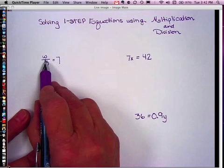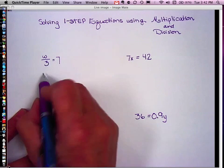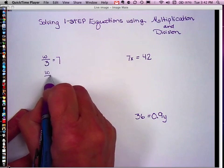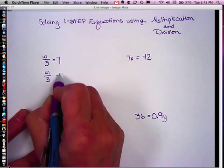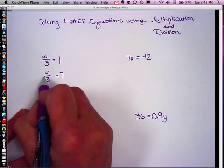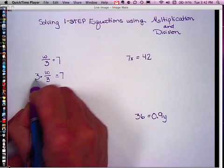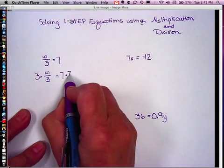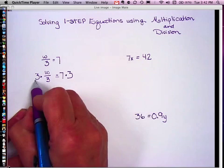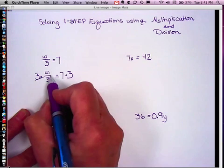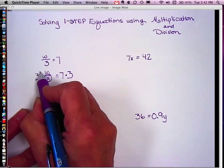So the inverse of dividing by 3 is to multiply by 3. I'm going to take w divided by 3 equals 7. I'm going to multiply the left side by 3 and multiply the right side by 3. The inverse of dividing by 3 is to multiply by 3.